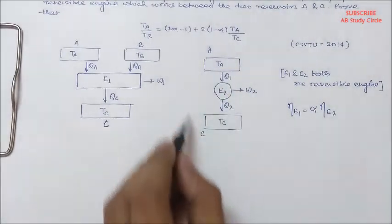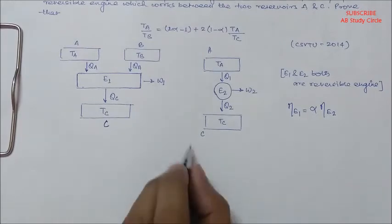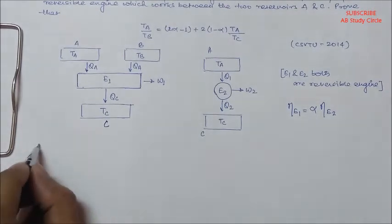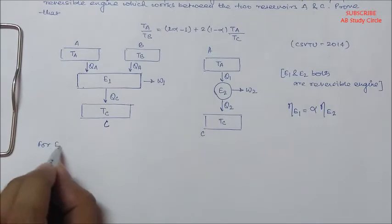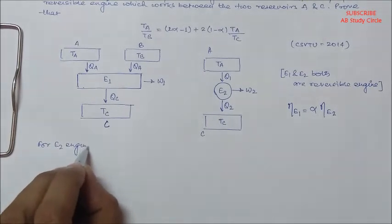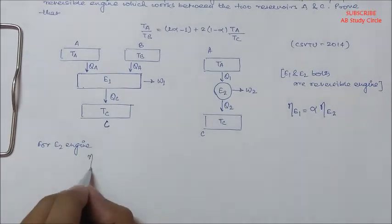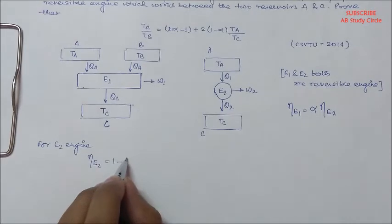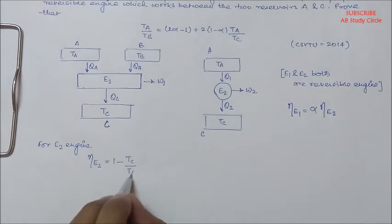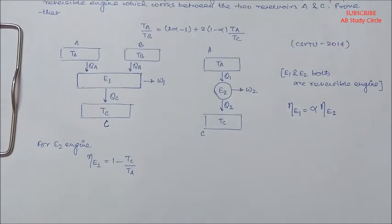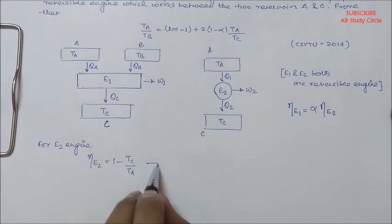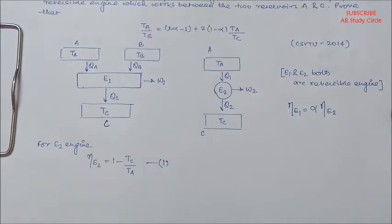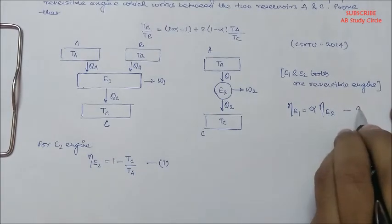Can you find out the efficiency for this reversible engine E2? For engine E2, the efficiency η_E2 = 1 - TC/TA, because it is a reversible engine, so we can express efficiency in terms of temperature. Let's call this Equation A.